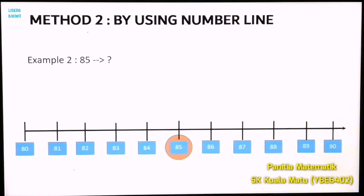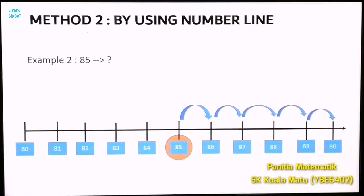From number 85, count how many steps are needed to reach number 90 — 1, 2, 3, 4, 5. It's 5 steps.